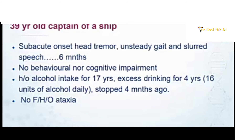He stopped drinking four months ago. There was no family history of ataxia. For a patient who has that kind of alcohol abuse presenting with unsteady gait, the obvious diagnosis that we usually make is alcohol-induced cerebellar ataxia.